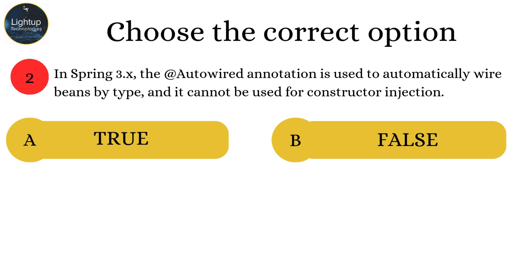In Spring 3.x, the @Autowired annotation is used to automatically wire beans by type, and it cannot be used for constructor injection.